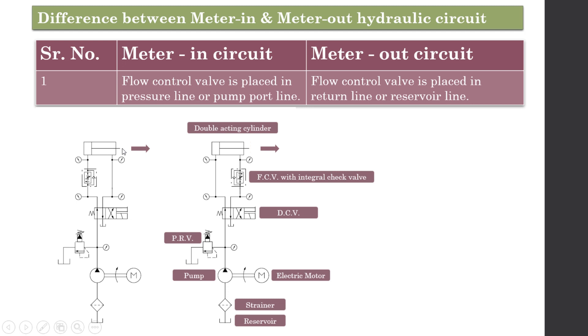The fluid is admitted on this side of the piston, causing forward motion. Since the liquid entering the cylinder is controlled, this is known as the meter-in circuit. In the meter-out circuit, exactly the opposite arrangement is used.